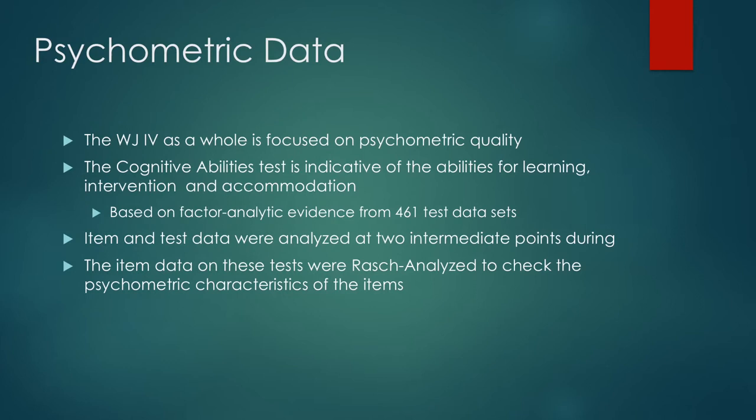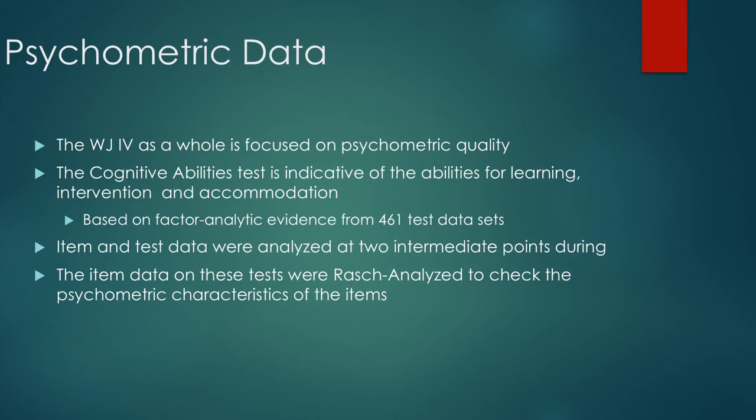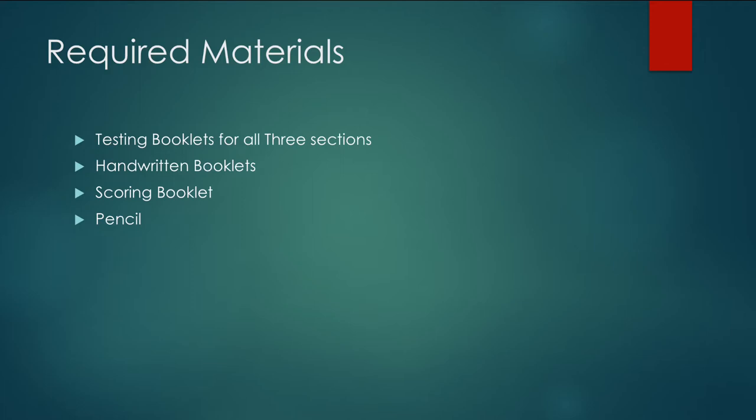Psychometric data: the WJ-IV as a whole was very focused on psychometric quality. When purchasing a WJ-IV test, all required materials will be sent to you. These include, but are not limited to, a testing booklet for all three sections, handwritten booklets, scoring booklets, and a pencil.